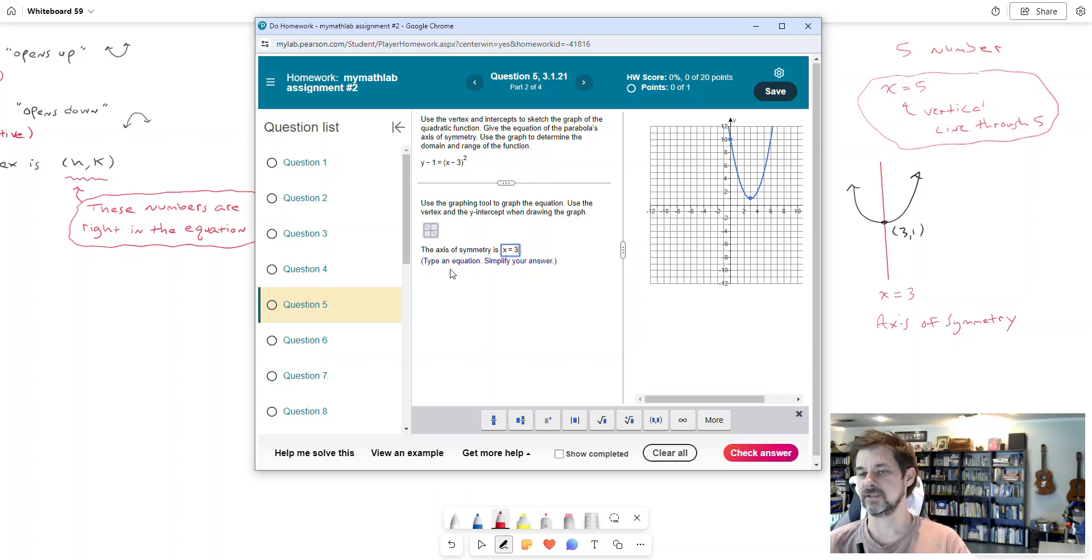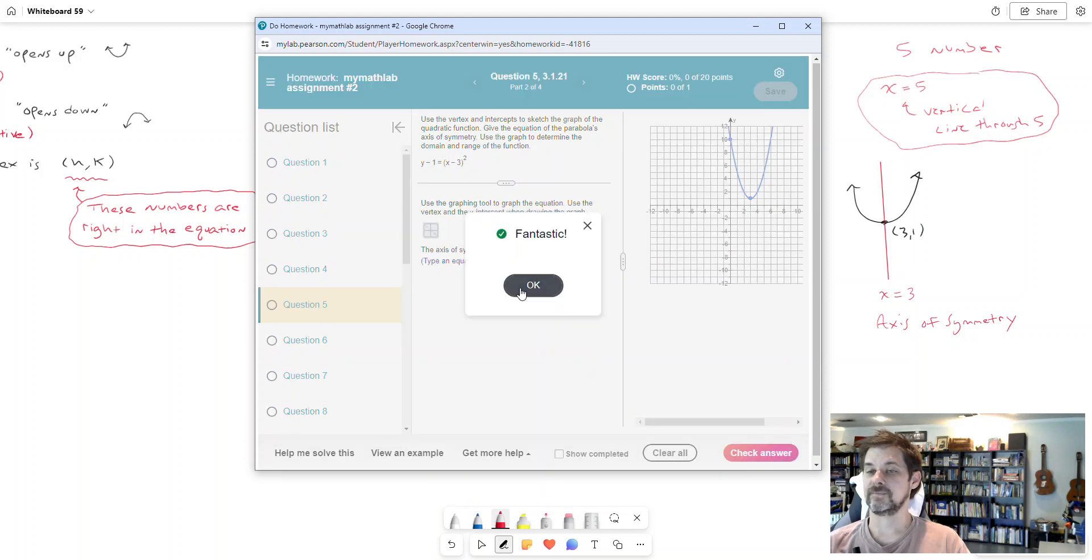So don't put three in put X equals three. Because that's a line. There's even a little hint here in the instructions. It says type an equation. So if you forget about that, it does say type an equation. It doesn't say type a number in. So we'll check that. That'll be right.